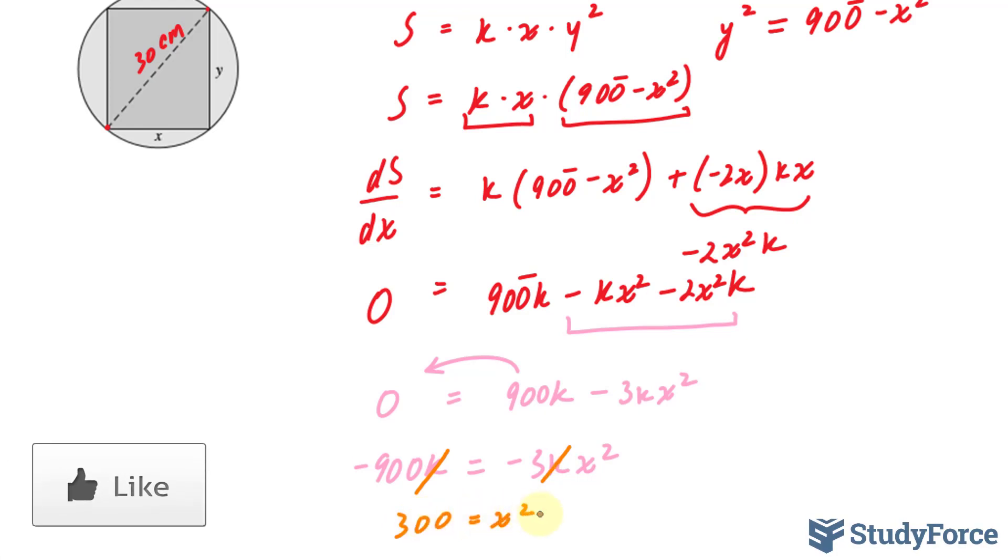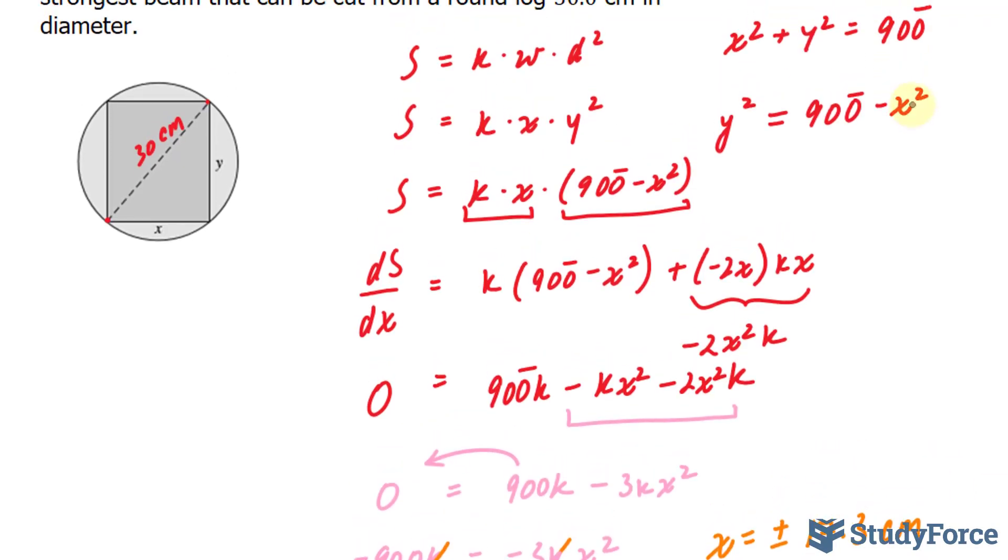If I square root both sides now, I end up with x is equal to plus minus 17.3 centimeters. We will discard the negative value, of course, giving us a depth of, and we'll use this number to substitute it into here.